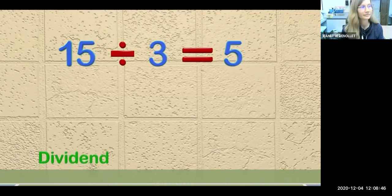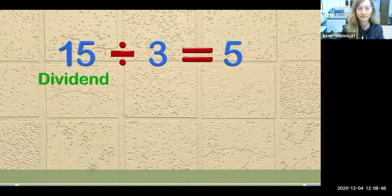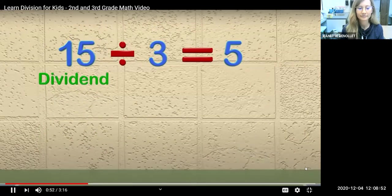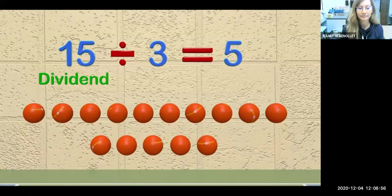The 15 in this equation is called the dividend. The dividend is the number you are dividing. So in this example, let's say we have 15 balls. The 15 balls are the dividend.